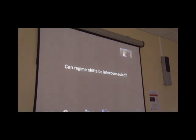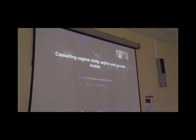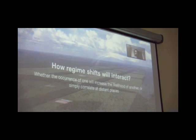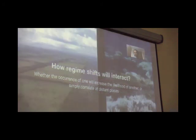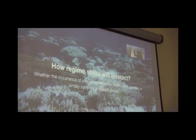One of the questions that has been central to my research is, can regime shifts be interconnected? We try to answer that question in a paper recently published in Science with people from Princeton and the Stockholm Resilience Center. Asking how regime shifts will interact is equivalent to asking whether the occurrence of one regime shift would increase the likelihood of another regime shift occurring or simply correlating in certain places. Going back to the example of the forest to savanna, the picture in the Chaco would be to ask whether the shift from the forest to savanna would increase the likelihood of coral reefs collapsing, or the other way around. If the coral reefs collapse, can that in some way or another increase the likelihood of the forest changing?